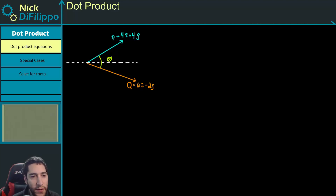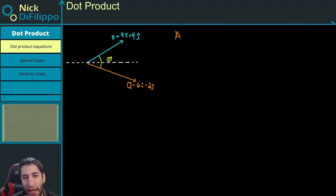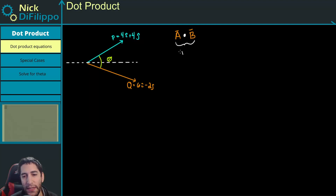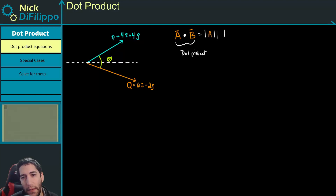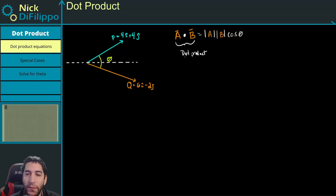We have two equations we can use with the dot product. The first equation is: if I have two vectors, A and B, you're going to see this dot in between these vectors, and this tells you it's the dot product. The first equation is that the magnitude of A times the magnitude of B times the cosine of theta is equal to the dot product.